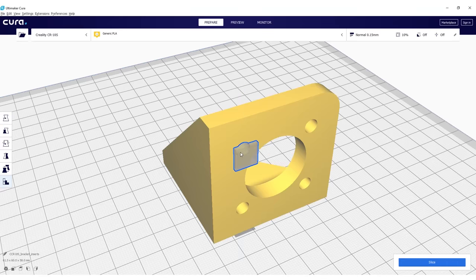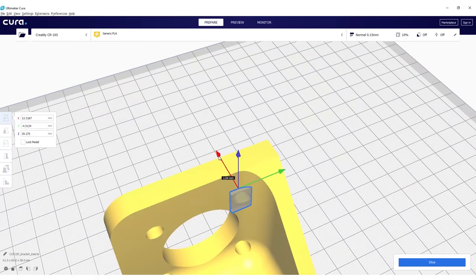Cura even allows you to create the modifier meshes in the slicer so you can even apply them to already existing parts.